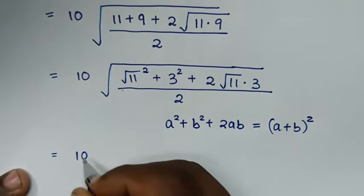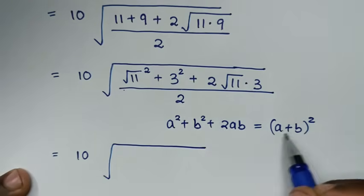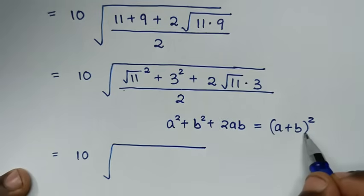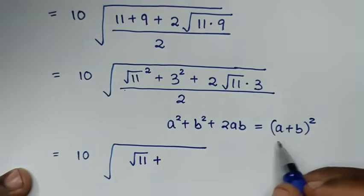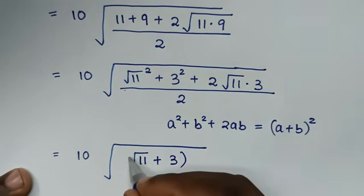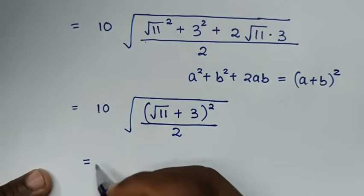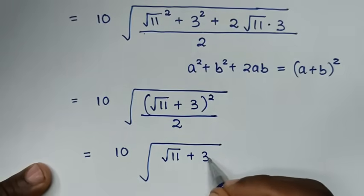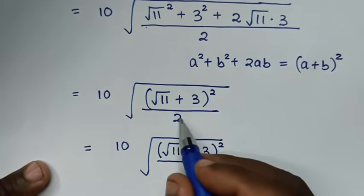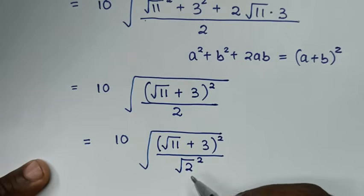Applying the perfect square form, where a is square root of 11 and b is 3, the numerator under the radical becomes (square root of 11 plus 3) squared. The denominator 2 can be written as (square root of 2) squared, and the square cancels with the square root, leaving square root of 11 plus 3 over square root of 2.